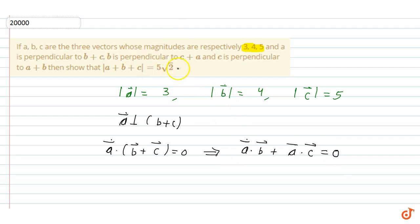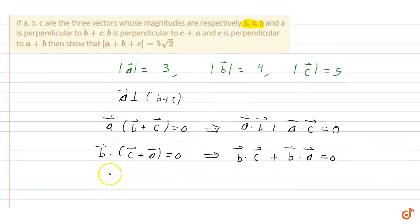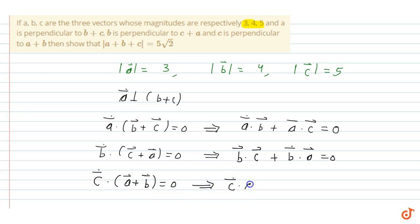Similarly, since B vector is perpendicular to C plus A, we have B·C + B·A = 0 — this is equation number 2. And since C is perpendicular to A plus B, we have C·A + C·B = 0 — this is equation number 3.